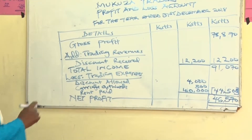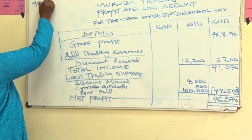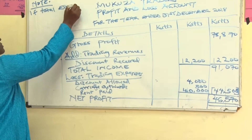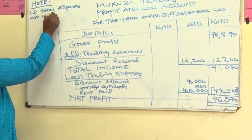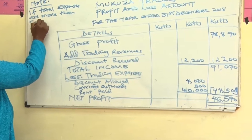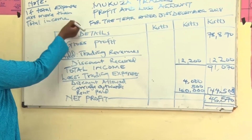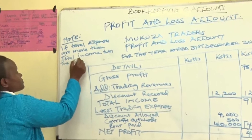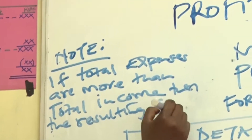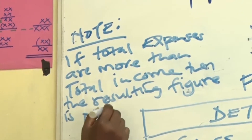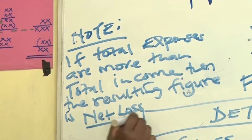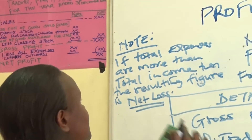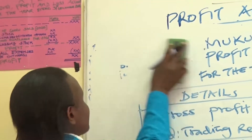If the total trading expenses are more than the total income, then the resulting figure is a net loss. So whenever you get a loss, you are correct — don't think you are wrong in your calculations. That is the end of the profit and loss account.